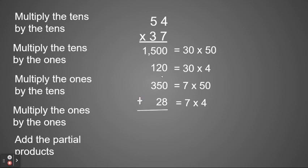Adding up, 0 plus 8 is 8. 2 plus 5 is 7, plus 2 more is 9. 5 plus 3 plus 1 is 9. And bring down my 1. So my final answer is 1,998.